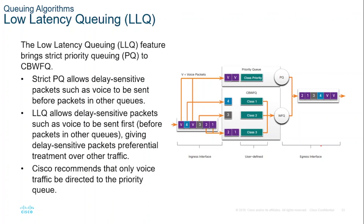All packets are serviced fairly based on weight, and no class of packets may be granted strict priority. This scheme poses problems for voice traffic that is largely intolerant of delay, especially variation in delay. For voice traffic, variations in delay introduce irregularities of transmission manifesting as jitter in the heard conversation. Hence, LLQ allows delay-sensitive packets such as voice to be sent first before packets in the other queues, giving them preferential treatment. Although it is possible to classify various types of real-time traffic to the strict priority queue, Cisco recommends that only voice traffic be directed to the priority queue.